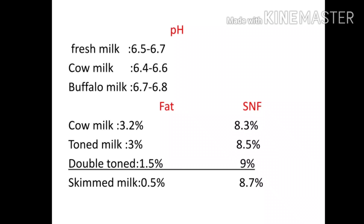SNF means Solid Not Fat. Toned milk SNF is more than 8.5%, skimmed milk SNF is 9%, and double toned SNF is 8.7%. Double toned milk fat is 1.5% and skimmed milk fat is approximately 0.5%.